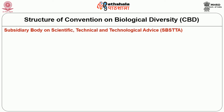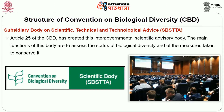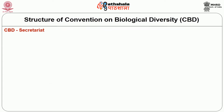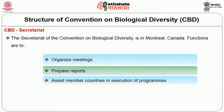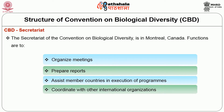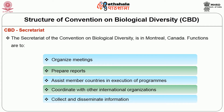Another structure is the Subsidiary Body on Scientific, Technical and Technological Advice. Article 25 of the CBD created this intergovernmental scientific advisory body, whose main function is to assess the status of biological diversity and the measures taken to conserve it. The Secretariat of the Convention on Biological Diversity is located in Montreal, Canada. Its main functions include organizing meetings, preparing reports, assisting member countries in execution of programs, coordinating with other international organizations, and collecting and disseminating information.